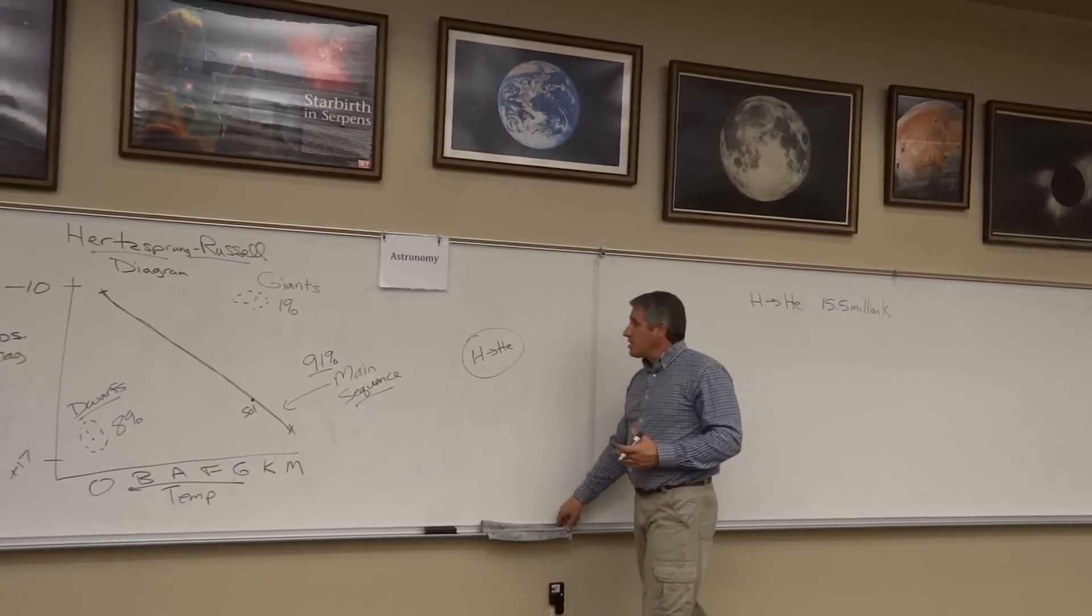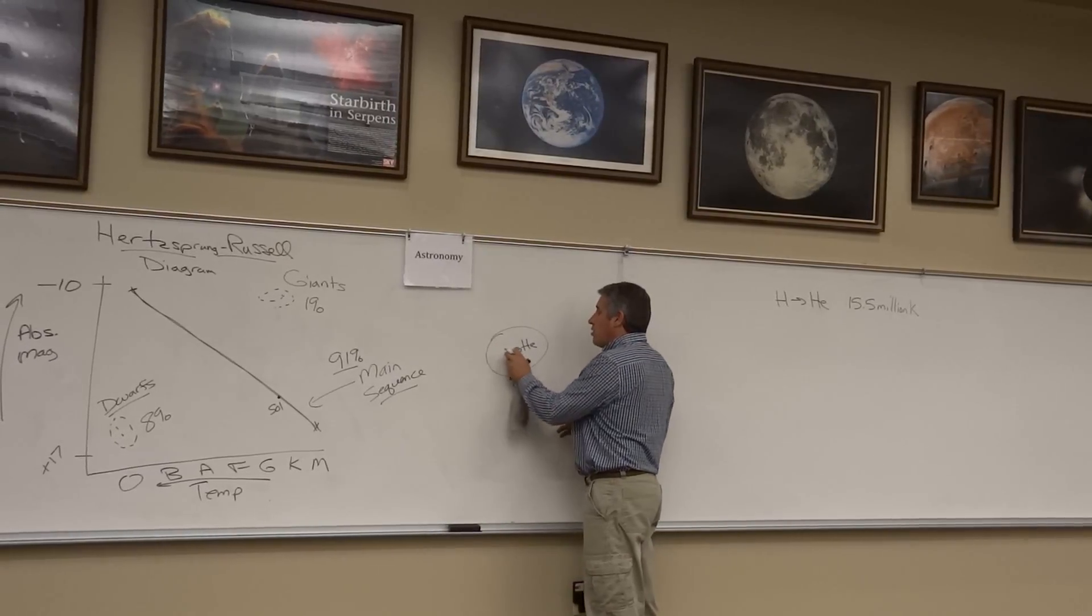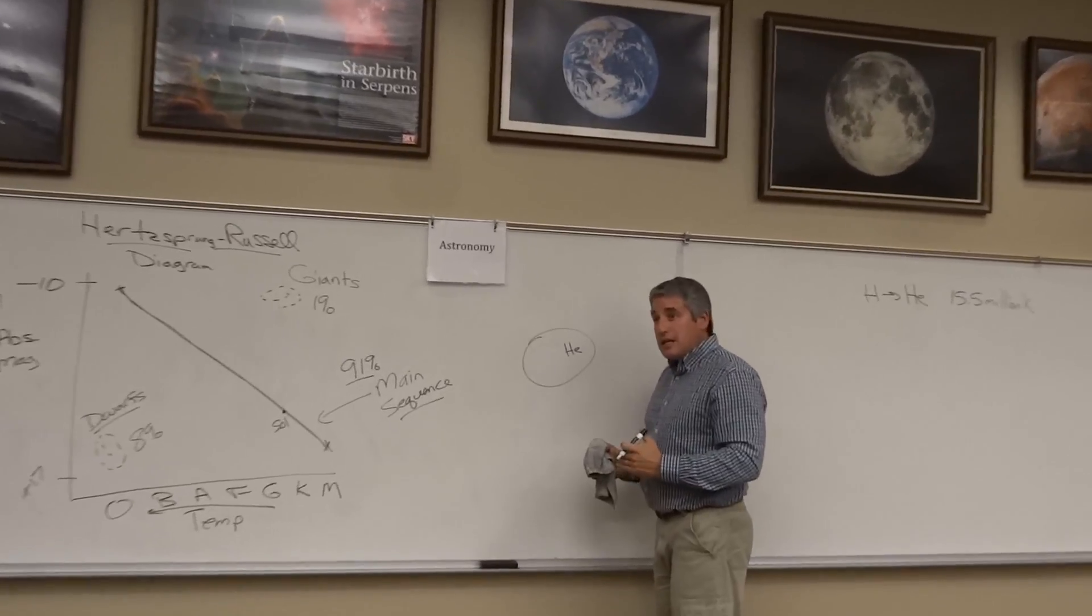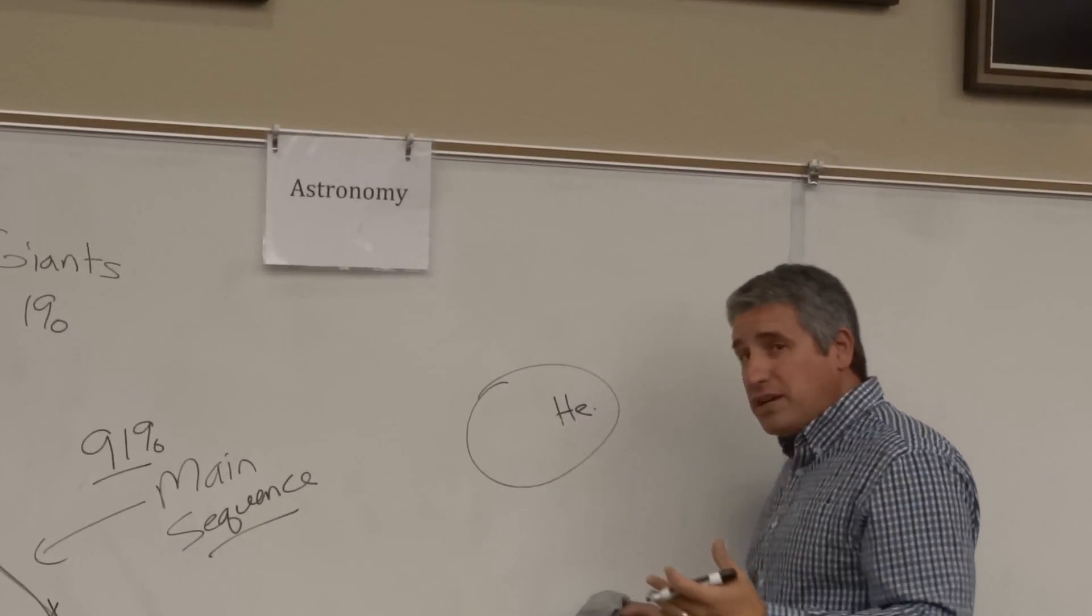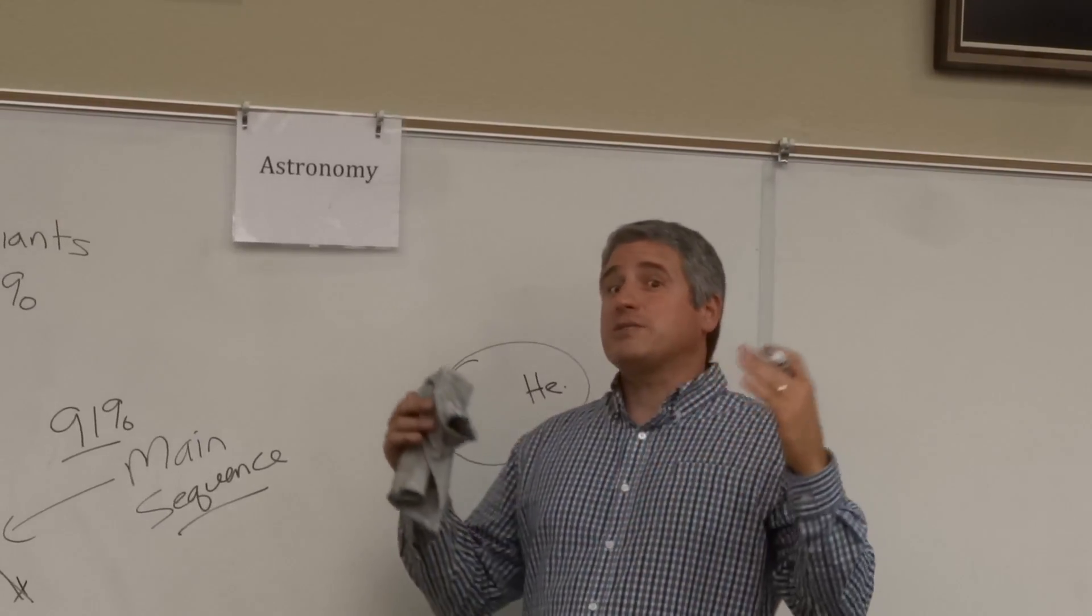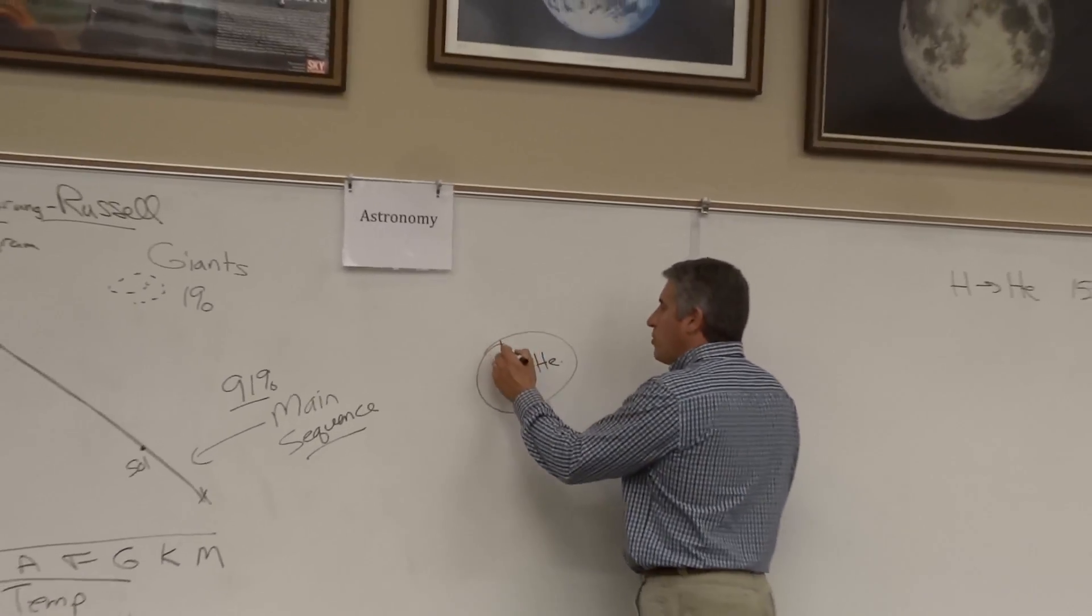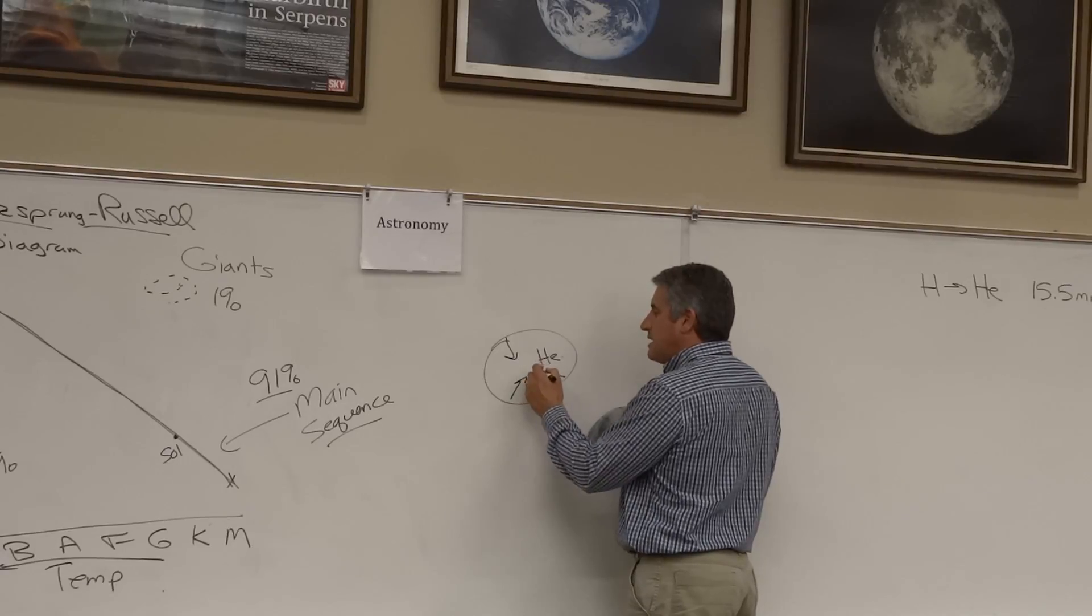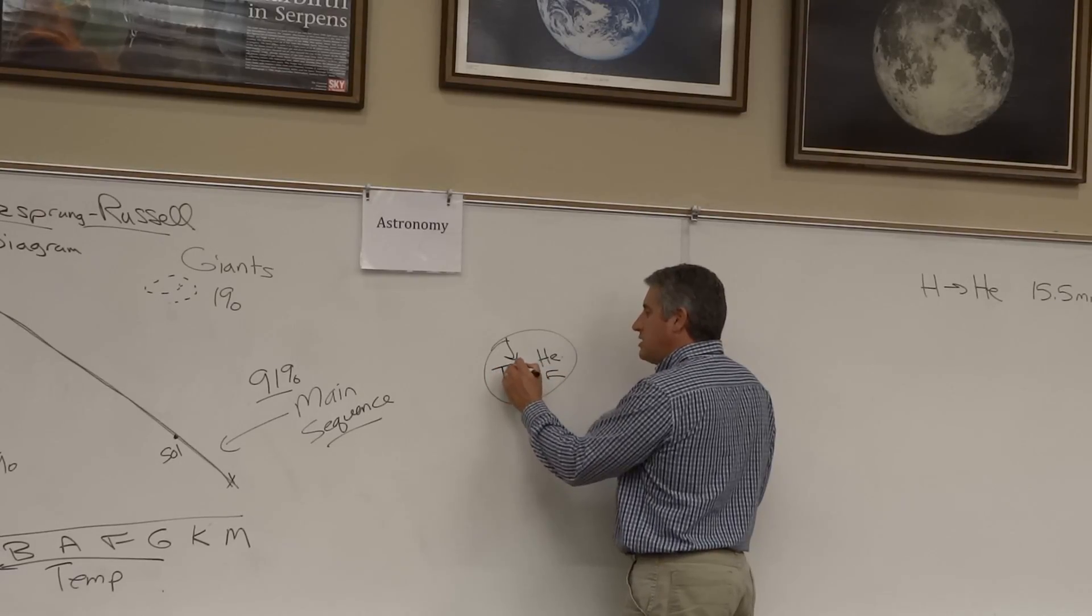At some point, the hydrogen is going to run out and we're left with a core of nothing but helium. Given that there is still gravitational pressure and there is no explosive gas pressure out, the helium core will begin to collapse. As we know from our basic physics, as the core collapses, the temperature increases.